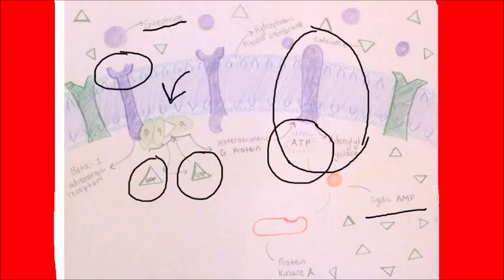cAMP then activates protein kinase A, which allows for calcium to rush into the cell in three different ways. You can see the protein kinase A as represented there.